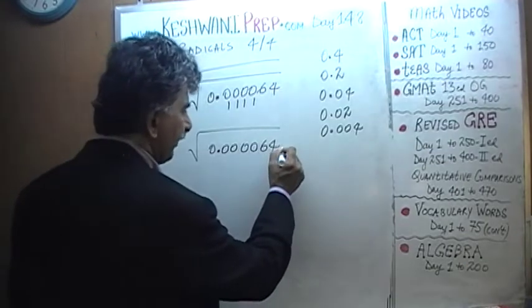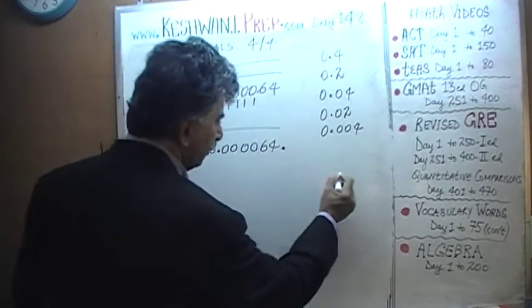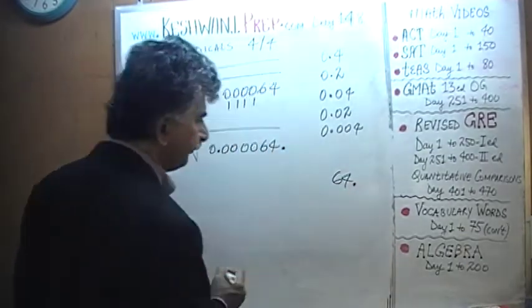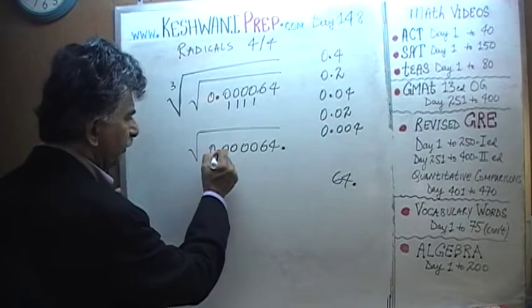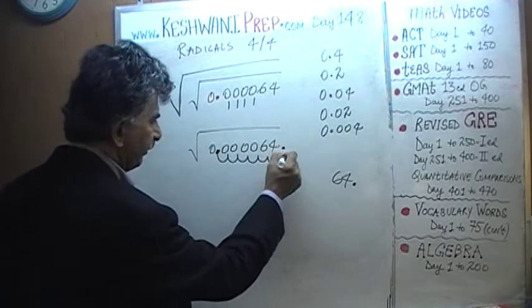Well, we need to move the decimal place here. Decimal place is right now here. We need to move it 1, 2, 3, 4, 5, 6 places. We need to move the decimal place 6 places.